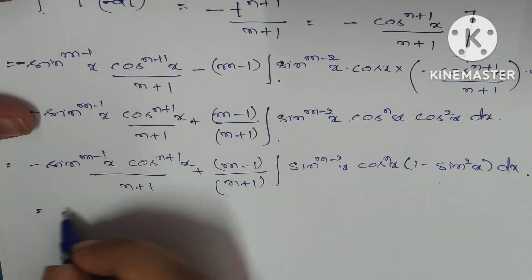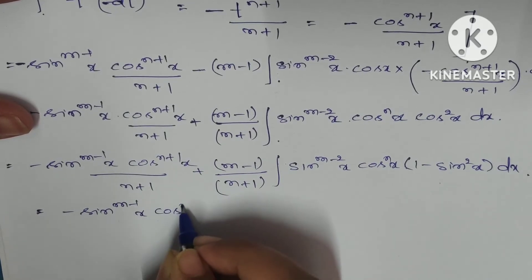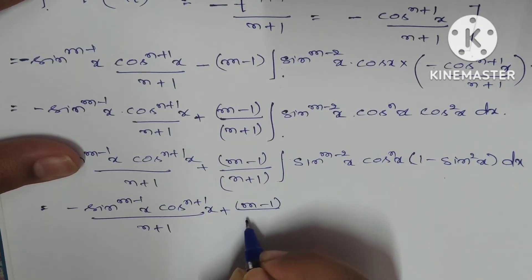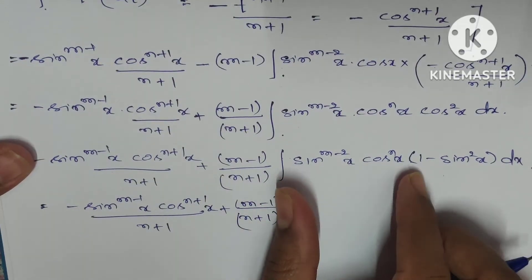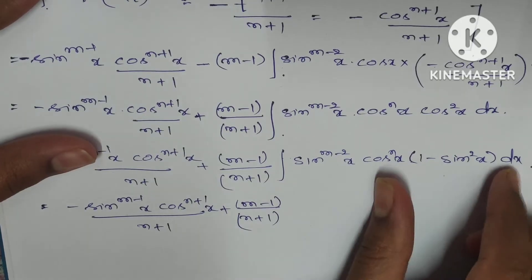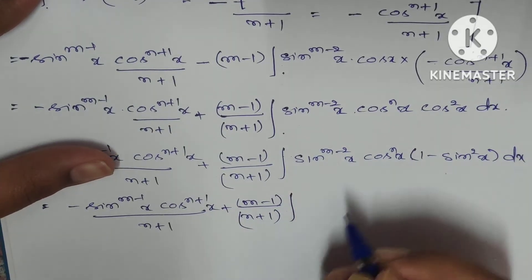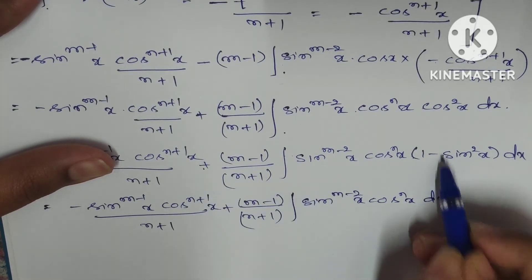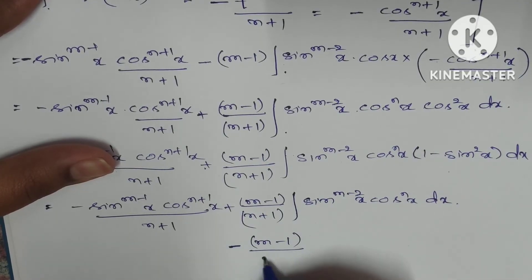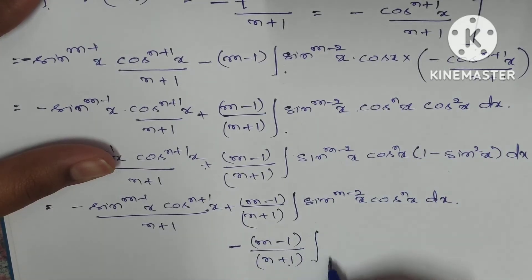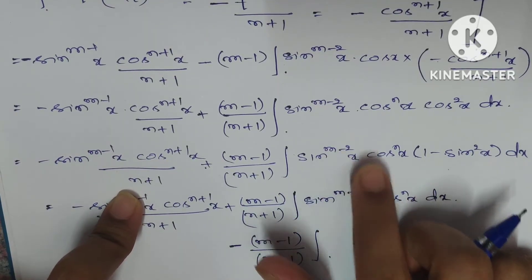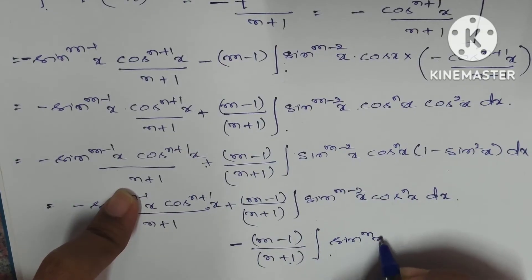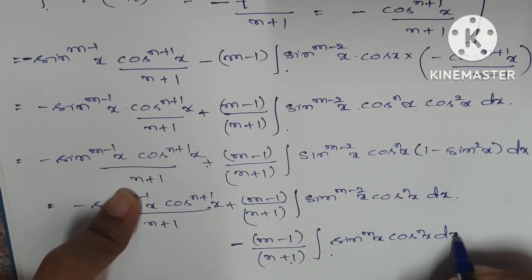Expanding inside the bracket gives two integrals: +(m-1)/(n+1) · ∫sin^(m-2)(x)·cos^n(x) dx, minus (m-1)/(n+1) · ∫sin^m(x)·cos^n(x) dx. Note that sin^(m-2)(x)·cos^n(x)·sin²(x) simplifies to sin^m(x)·cos^n(x).